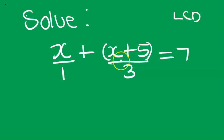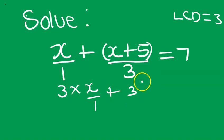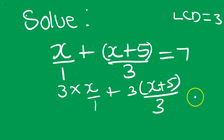The lowest common denominator of 3 and 1 is what? It's 3. Then we need to multiply throughout by the LCD, meaning we will have 3 times x over 1 plus 3 into x plus 5 all over 3 is equal to 7 times 3.